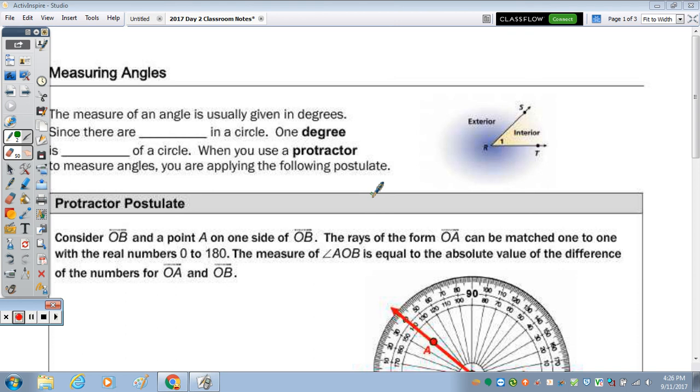At the top of the page it says that the measure of an angle is usually given in degrees. Since there are blank in a circle, well since we just talked about degree measurement, we know that there are 360 degrees in a circle. And one degree would be one out of the 360, or that fraction of the circle.